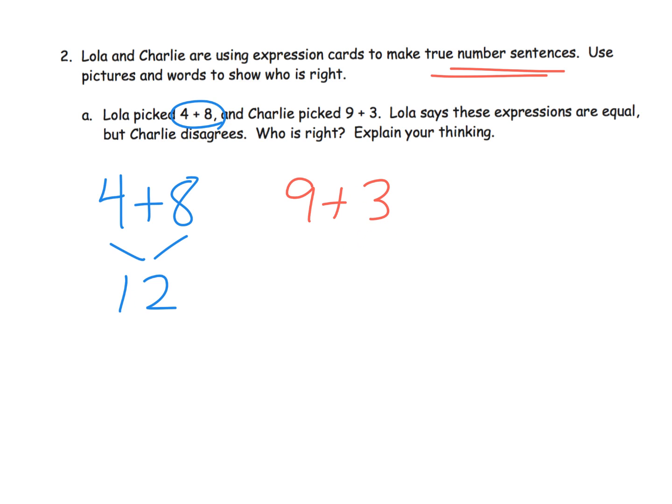And then over here, 9 plus 3. And 9 plus 3 is 12. And again, let your students have the opportunity to talk about how they know that 9 plus 3 is 12. And sure enough, 12 is equal to 12. So that means Lola is correct that these two expressions are indeed equal.